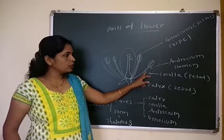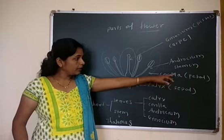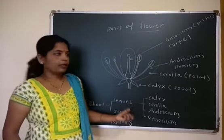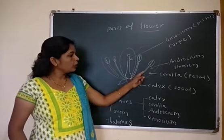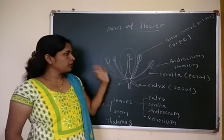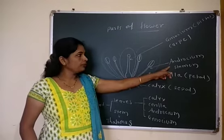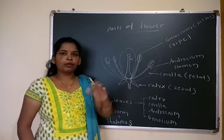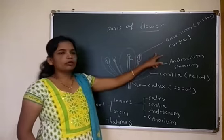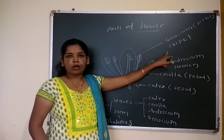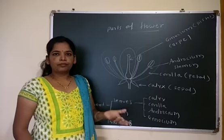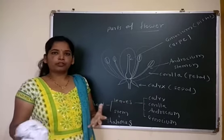Inner to calyx there is corolla, whose individual member is petal, which are colorful, fragrant, and help to attract insects. Inner to corolla there is androecium; the individual member is called stamen. The function of androecium is to produce pollen grains. The innermost whorl is gynoecium or pistil, whose individual member is called carpel, and the function of gynoecium is to produce female spores.